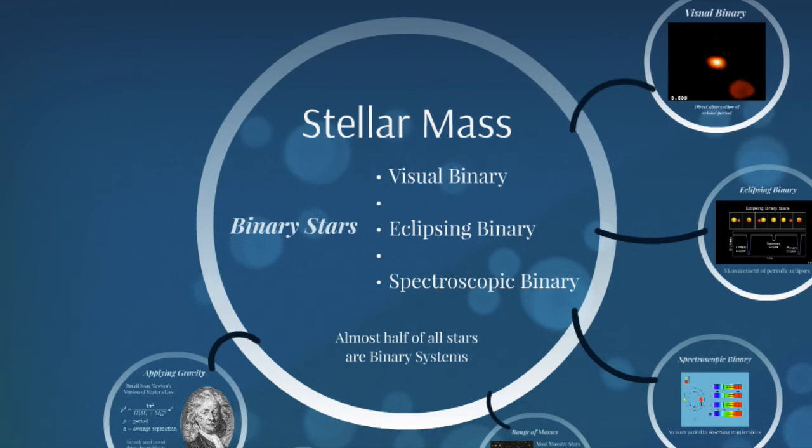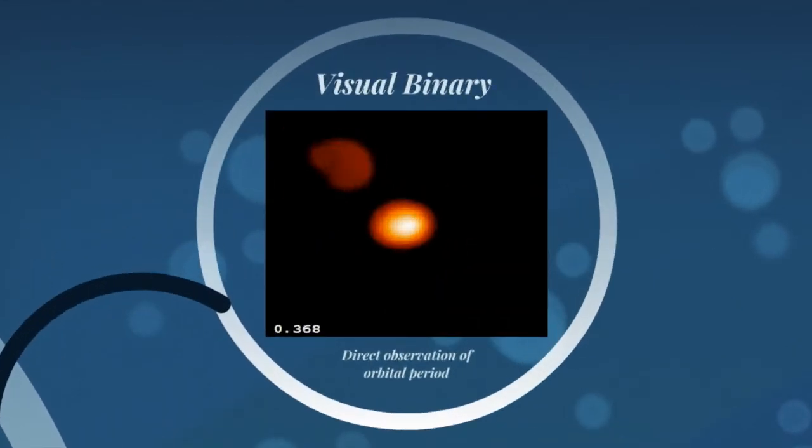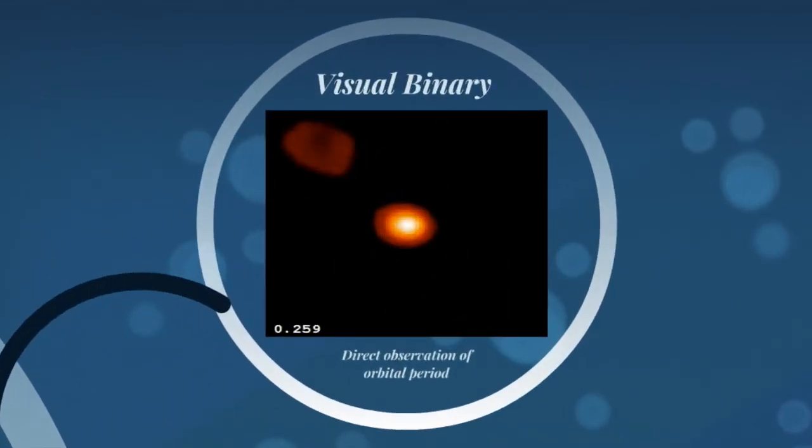And there are three types of binaries. There's going to be a visual binary, an eclipsing binary, and a spectroscopic binary. The visual binary is a set of stars that are orbiting each other. And they're orbiting each other in a way that we can observe the orbits of the stars.